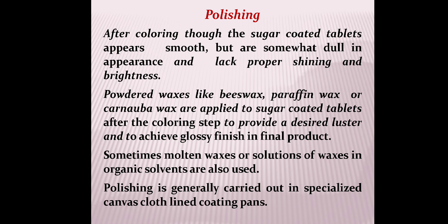After coloring, the sugar-coated tablets appear smooth but are somewhat dull and lack proper shining and brightness. Powdered waxes like beeswax, paraffin wax, or carnauba wax are applied after the coloring step to provide desired lustre and achieve a glossy finish. Sometimes molten waxes or solutions of waxes in organic solvents are also used for faster processing. Polishing is generally carried out in specialized canvas cloth-lined coating pans.